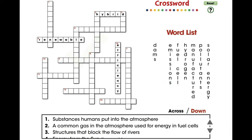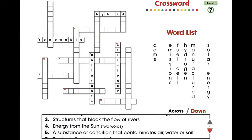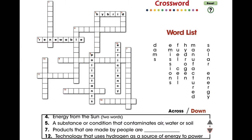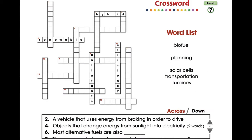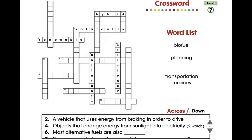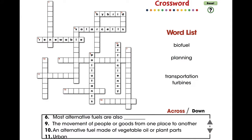Drag a word from the list to its correct position in the puzzle. Use the arrows to scroll through all the clues. Switch between across and down clues and words. Visit ccpinteractive.com for extended versions of our products and to watch more demo videos.